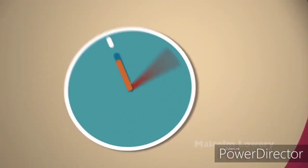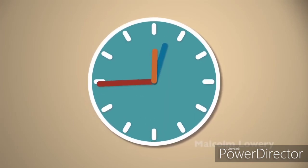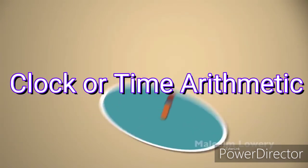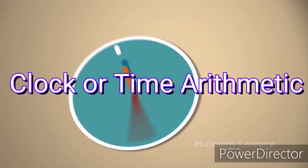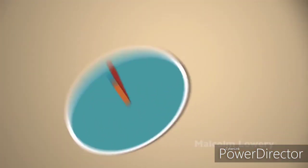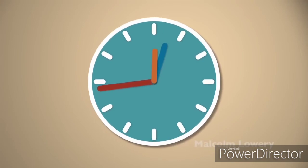And now, we are going to proceed to our last topic for today's discussion which is about the application of Modular Arithmetic in Clock or Time Arithmetic. Looking at a 12-hour analog clock, it is easy to tell from this what hour it currently is. It is up to us to know if it is AM or PM. However, what if we have a 24-hour digital clock?